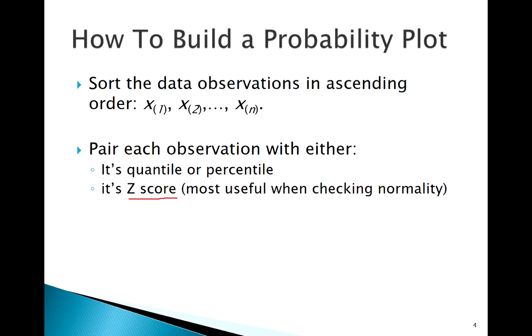You can make probability plots to check does my sample come from other distributions. That's where the quantile or percentile approach might come in handy. But when we're checking from a normal distribution, just make a z-score. We'll take our data, we'll number it, and we usually want to put our x values on that x-axis.